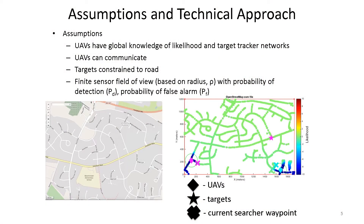A couple of assumptions about the work. First, we assume that each of the targets is constrained to a road network. On the left here you can see an actual road network from a street map, and on the right you can see a likelihood network that we built from that road network. The likelihood network says what sort of targets we're dealing with — if you have low likelihood, you assume there aren't any targets in that area, and if you have high likelihood, you expect there would be a target around that you could detect eventually.